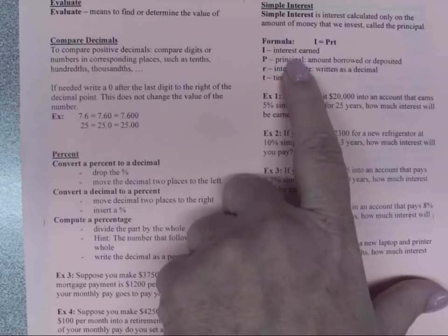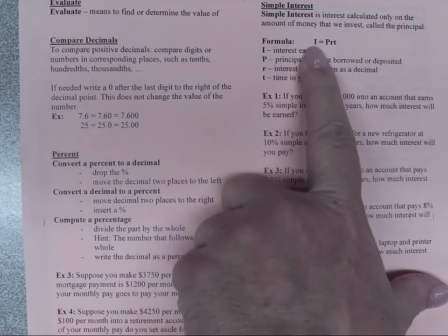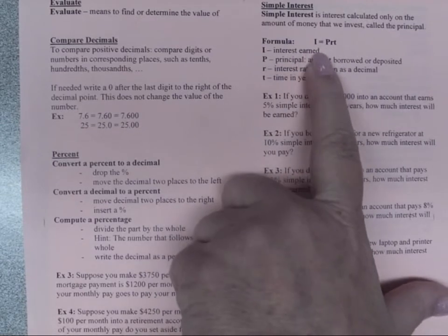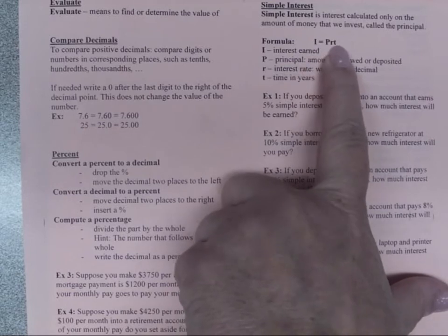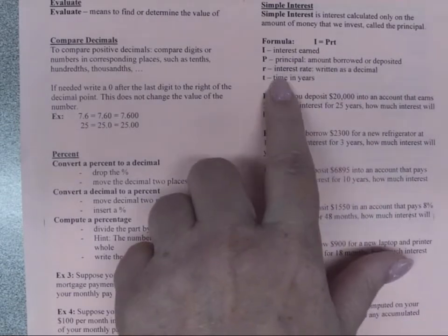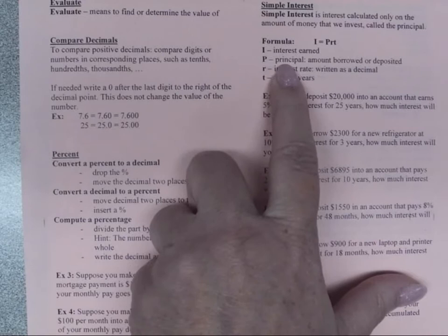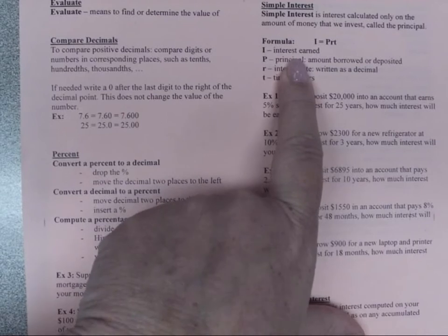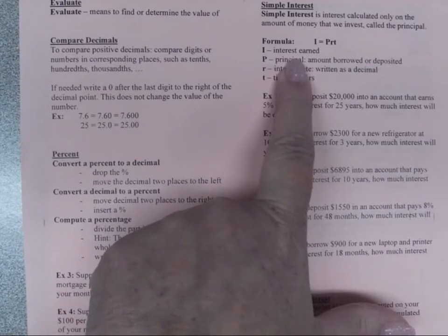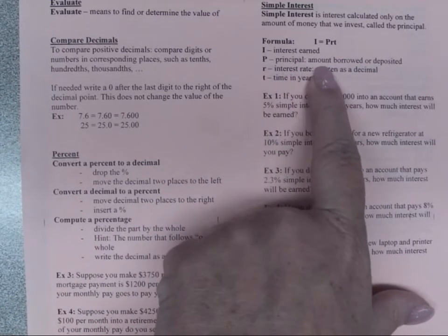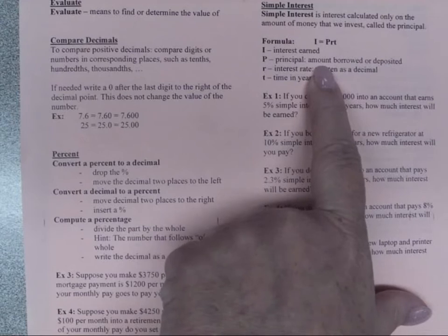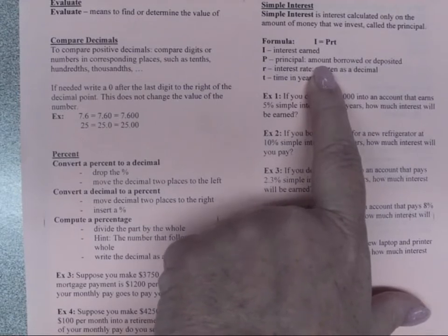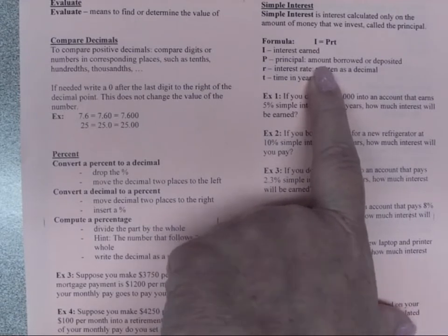So for simple interest, the formula is I equal to PRT. Thus the interest is equal to the principal times the rate times the time. The principal is the amount borrowed or deposited, and the interest earned, not the interest that you gain or interest that you pay. So what the principal means is that either borrowing money for a loan or I'm depositing money into an account.